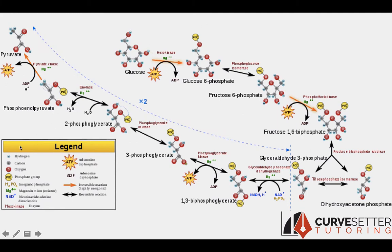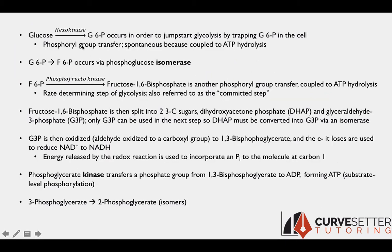This is a pretty useful diagram that has a lot of information packed into it. The first step is catalyzed by hexokinase, and it's simply the phosphorylation of glucose at carbon number six — going from glucose to glucose-6-phosphate. This step occurs to first jumpstart glycolysis. Glucose-6-phosphate is trapped in the cell at that point because it's charged due to that phosphate group, so this step sort of jumpstarts glycolysis.